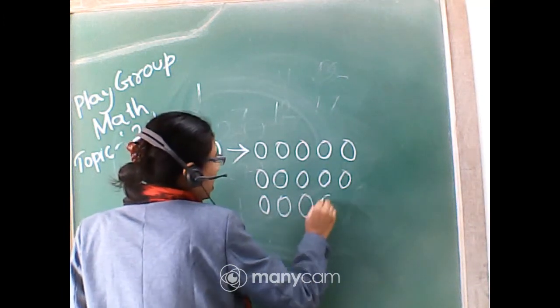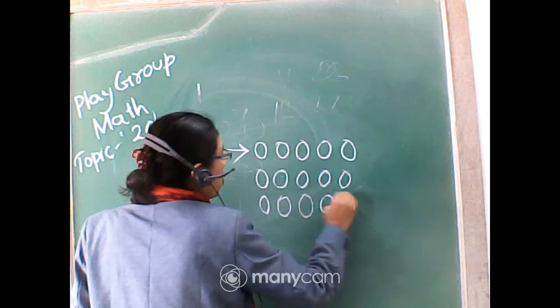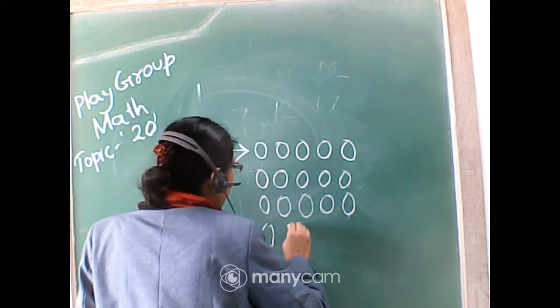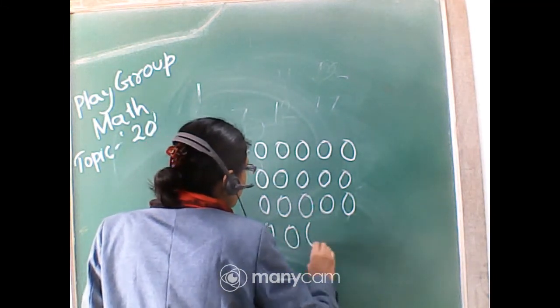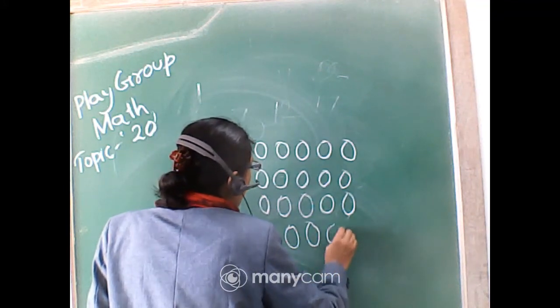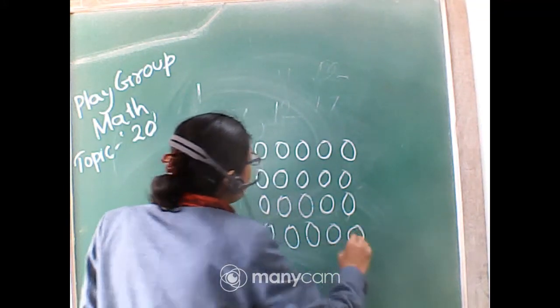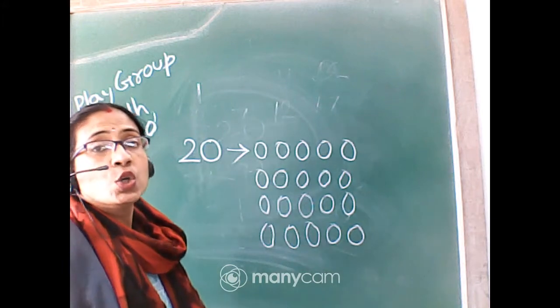1, 3, 13. 1, 4, 14. 1, 5, 15. 1, 6, 16. 7, 17. 1, 8, 18. 1, 9, 19. And then after 2, 0, 20.